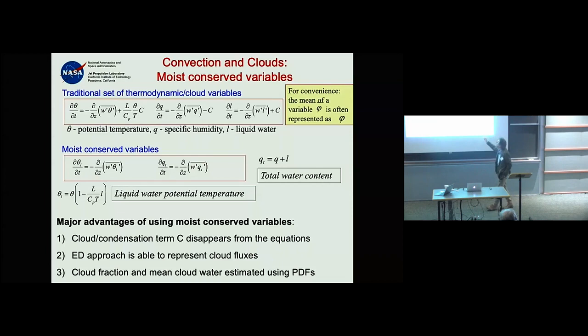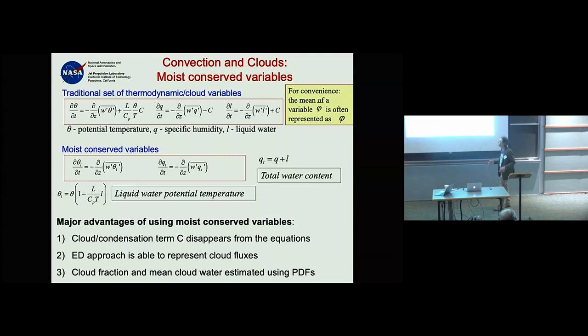There are very practical advantages. Not only do you end up with D(something)/Dt = 0, which is very convenient, but from a parameterization perspective the cloud condensation term C basically disappears from the equations.